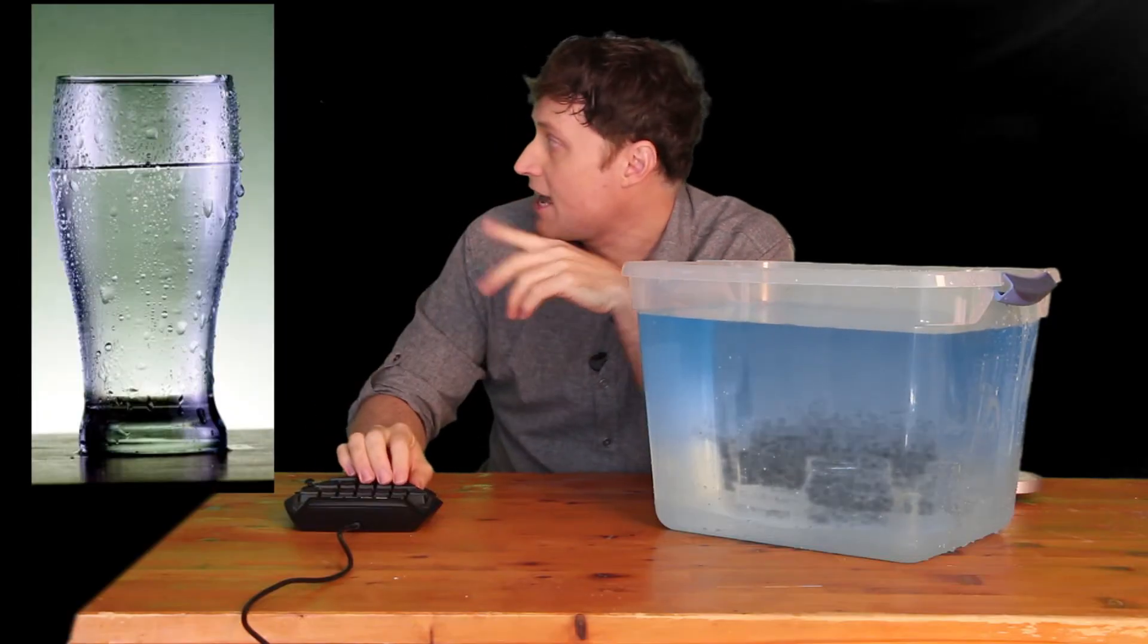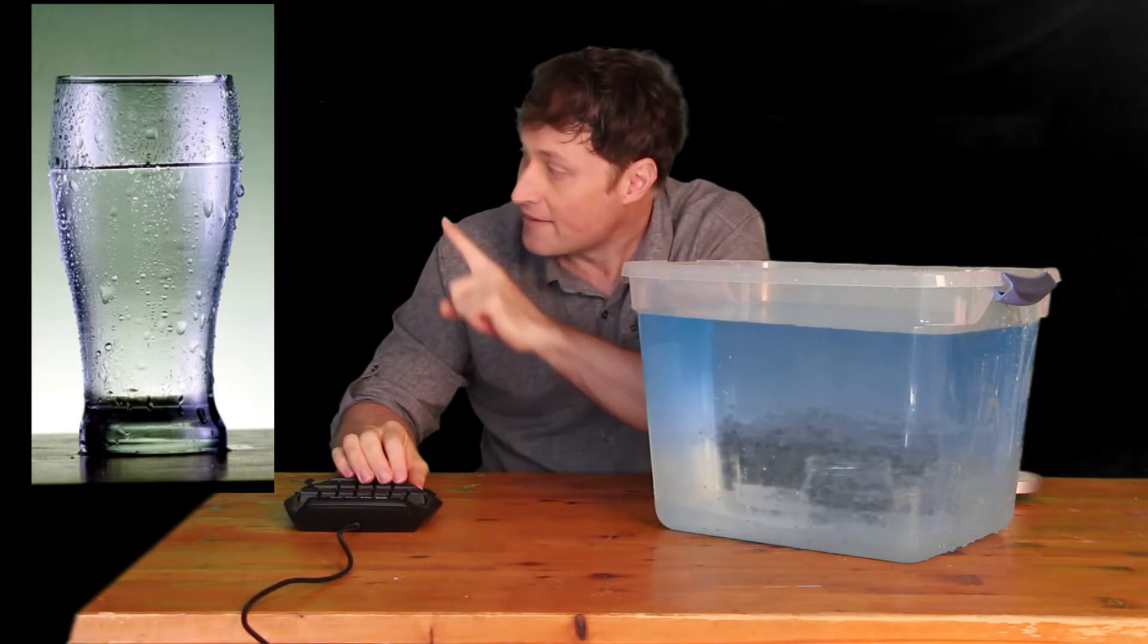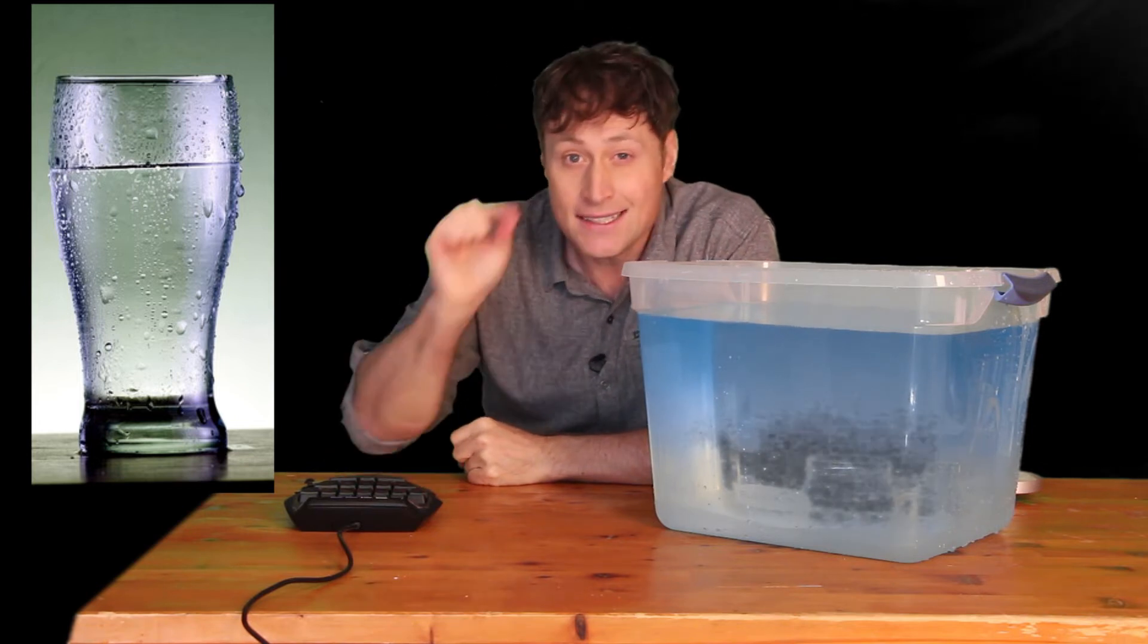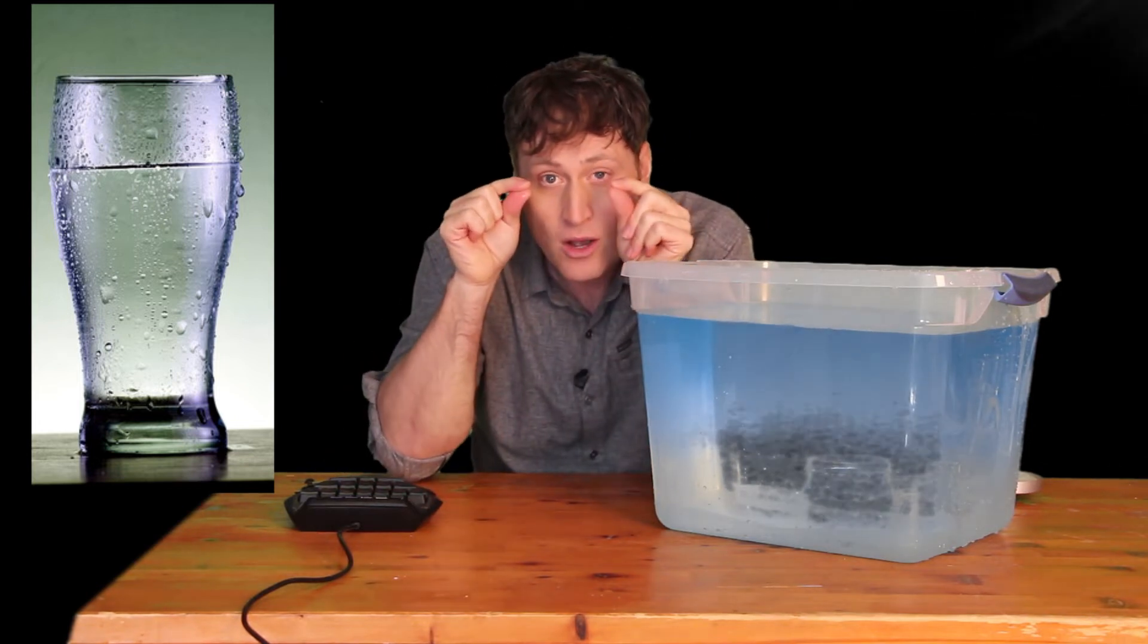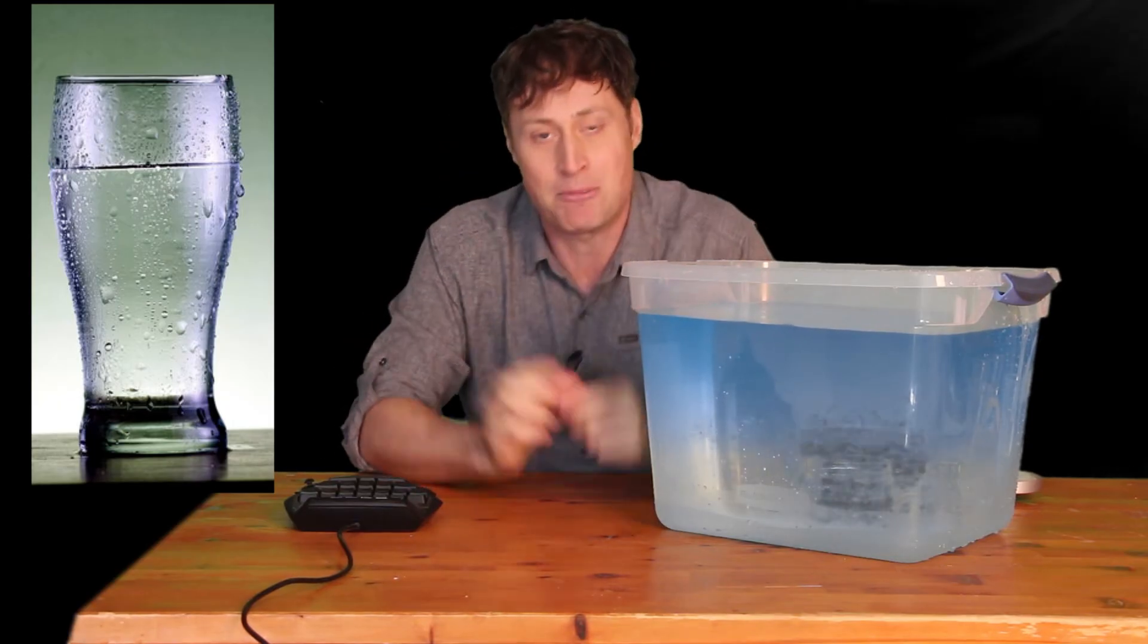Now if you've ever seen a glass of water, a cold glass of water on a warm day, on the outside of the glass you'll notice little drops of water form. That's called condensation. And if you look closely, little tiny drops of water will start coming together and joining other drops of water until eventually that drop gets big enough that it slides down the glass.